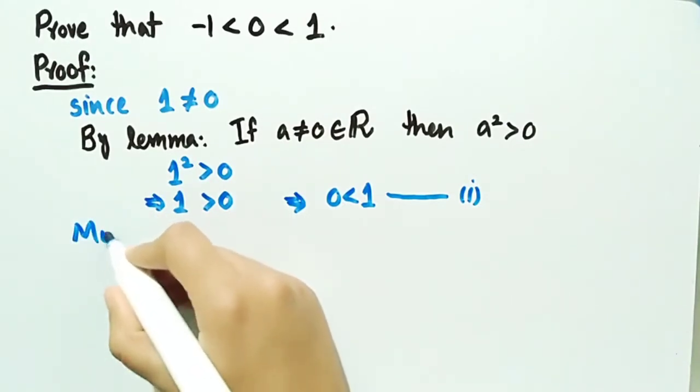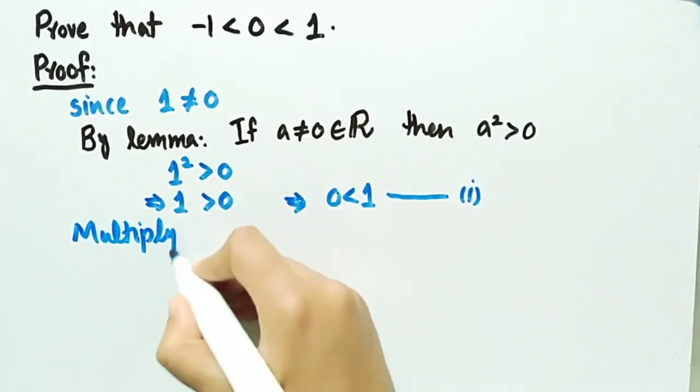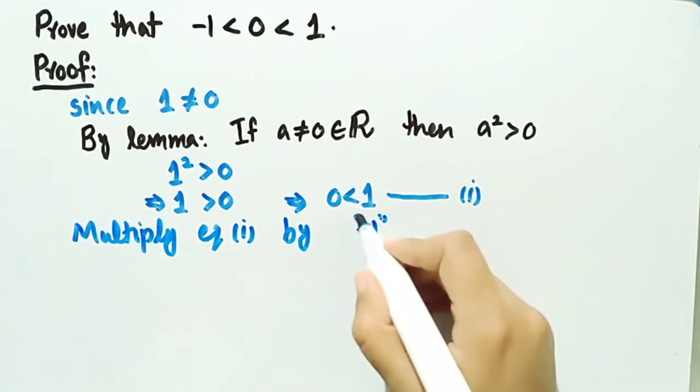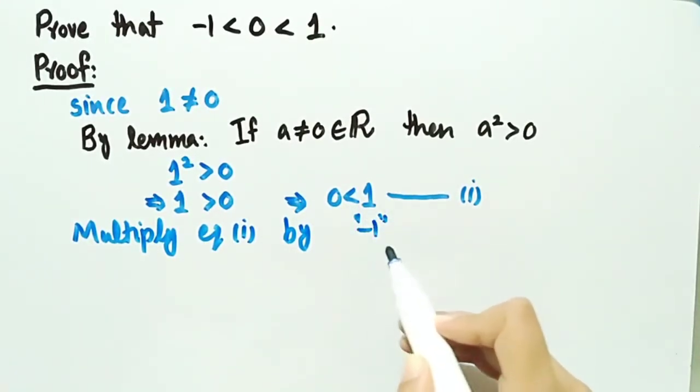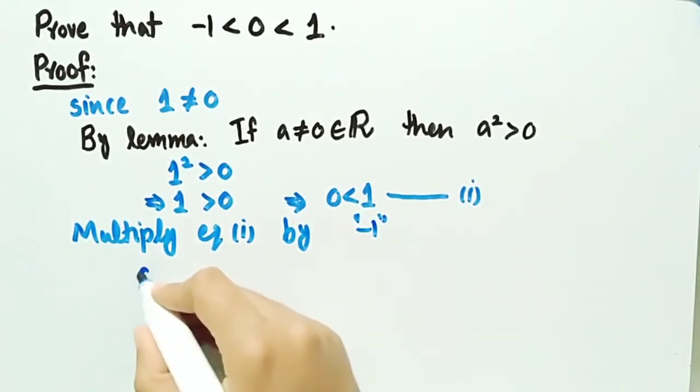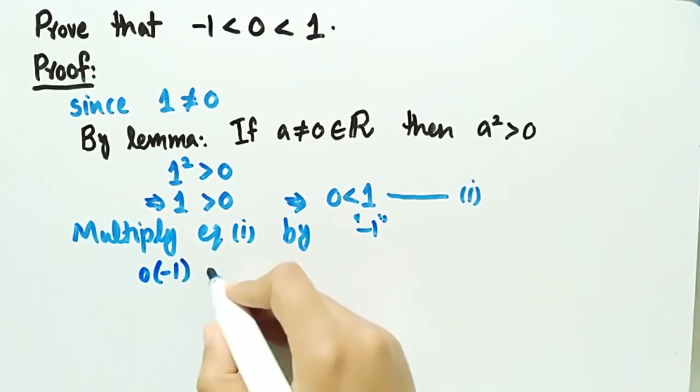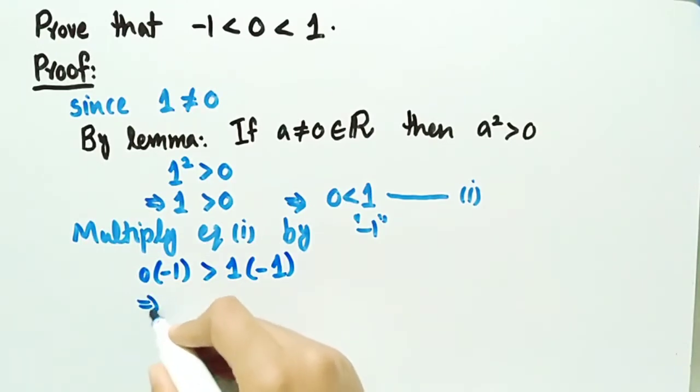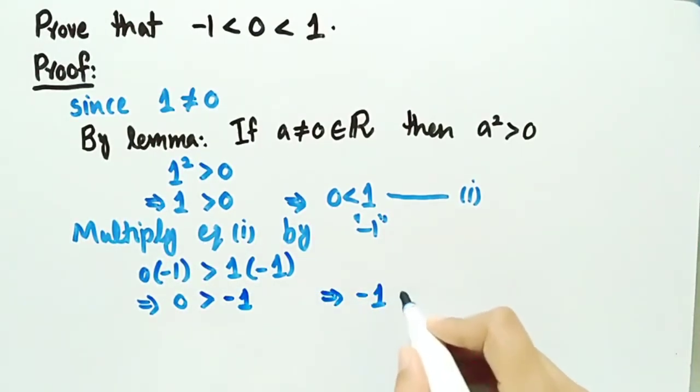Now multiply equation 1 by -1. Since we're multiplying by a negative number, the inequality reverses: 0·(-1) > 1·(-1). Since any real number multiplied by 0 equals 0, this gives 0 > -1, or equivalently -1 < 0. Let this be equation 2.